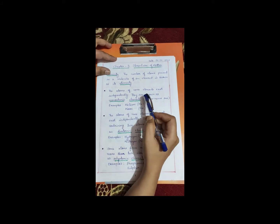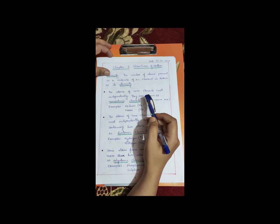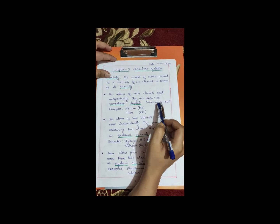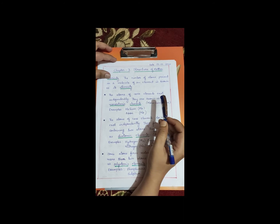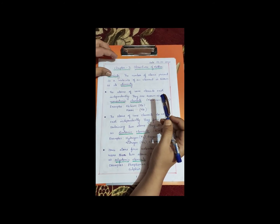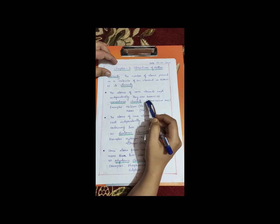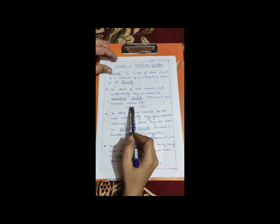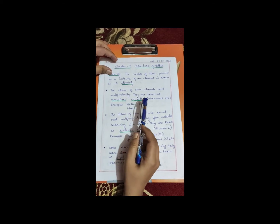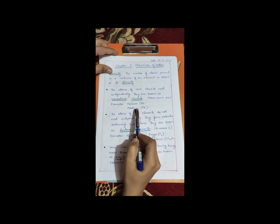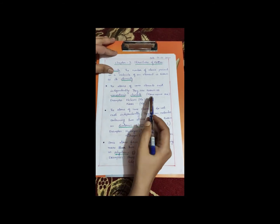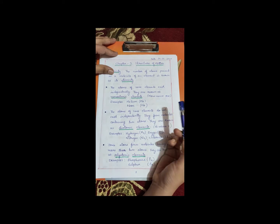The atoms of some elements exist independently. They are known as monoatomic elements — mono means one. If there is only one atom, those type of elements are called monoatomic elements. Examples are Helium (symbol He) and Neon (symbol Ne). Both exist as single atoms, so they both have an atomicity of one.